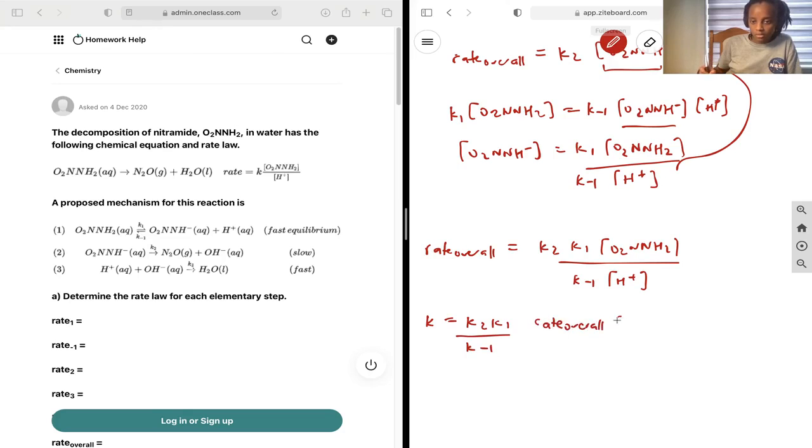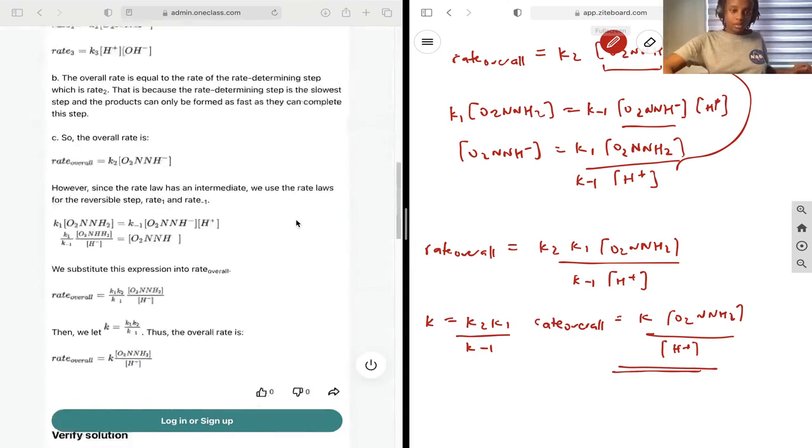Rate overall becomes k O2NNH2 over H plus, and this looks exactly like what we're given in the equation, and so that becomes our final answer.